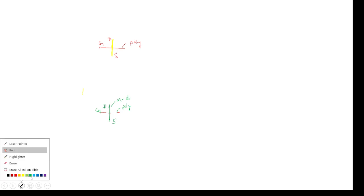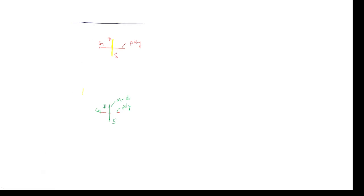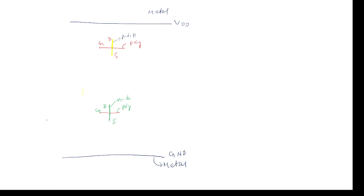Now, supply is required and ground is required. For that, blue is used for metal. This is metal blue — VDD. Metal color is blue, and ground is also required. This is ground — this is also metal; metal color coding is ground. Now we need to give the connection from drain to supply. There are two ways: we can extend with metal or we can extend with yellow color — P diffusion. Both are correct. I am extending with P diffusion.